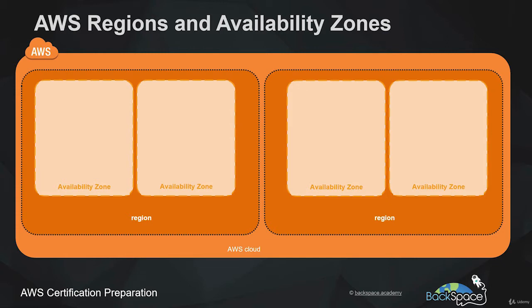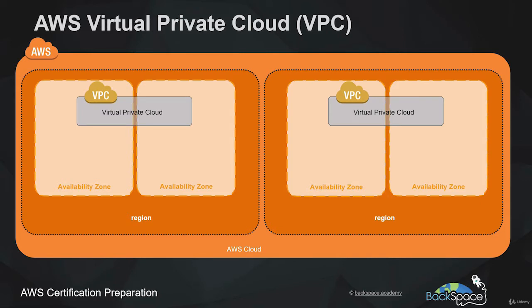The number of availability zones per region varies — US East has a lot of them whereas Mumbai has only a few. We can create a Virtual Private Cloud within a region, and that VPC is our own private space within the AWS cloud. Every time an account is created, a default VPC in each region is also created automatically.